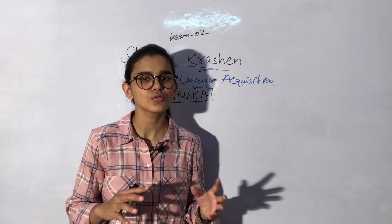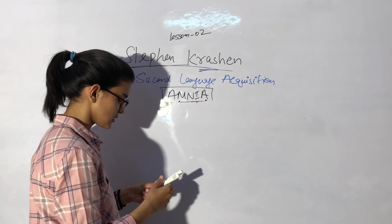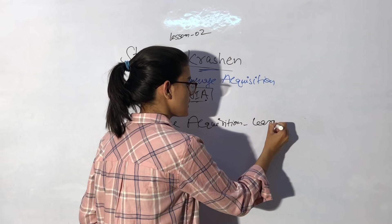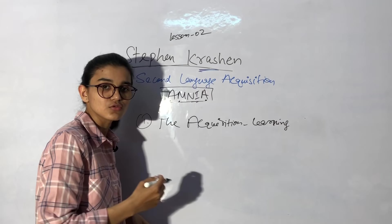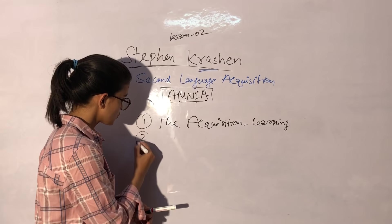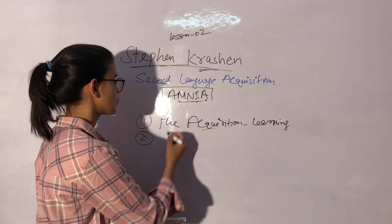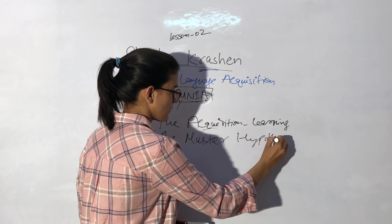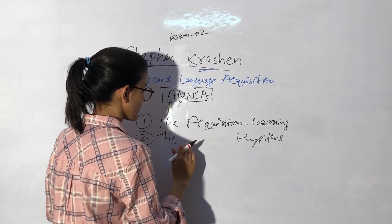Now, let's revise it quickly. First, what was your acquisition-learning hypothesis? The acquisition-learning hypothesis says that if you acquire the language, it is necessary. It means that in the target language, there is communication with children. There is no focus on grammar, but you need to give that experience so that they can acquire the language. The second thing is M, the monitor hypothesis.